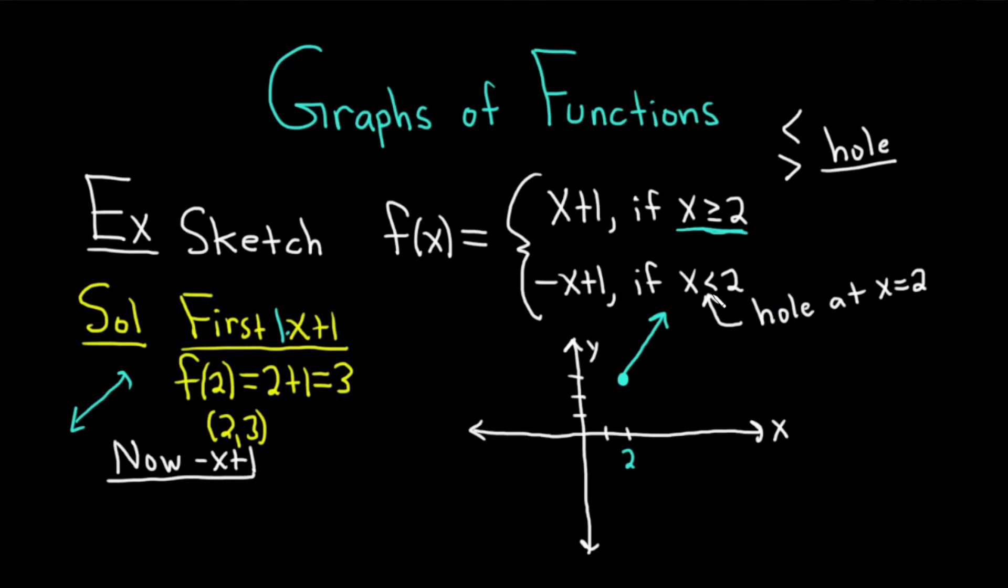So to find the y value of the hole, what you do is you take this number and you put it where the x is. And you're not supposed to do that, right? Because if you plug in 2, you're supposed to use the first piece. So we're breaking the rules in order to find the hole. Instead of negative x plus 1, it's negative 2 plus 1, which is negative 1. When x is 2, the y value is negative 1. But at 2 negative 1, we have a hole. This always works. So to find the hole, which you know you're going to have if you have a less than or a greater than, you take the number and you put it there. But it's really important that you don't write f of 2 because that would be wrong. So we're just breaking the rules to find the hole.